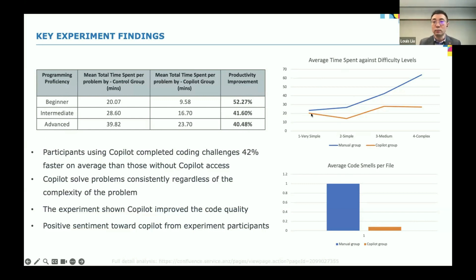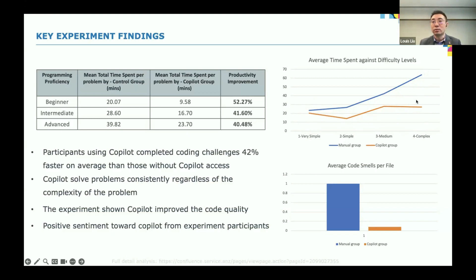Secondly, we used different interview-grade questions for people to perform. For complex problems, doing it manually takes much longer, but with GitHub Copilot it's consistent time-wise. As a result, for very simple problems, Copilot may not add that much value — the times are pretty much identical. But once you increase complexity, using AI-generated tools becomes much more advantageous for programmers and engineers.